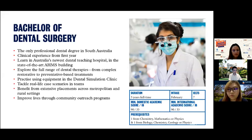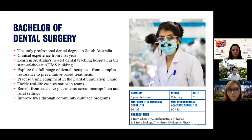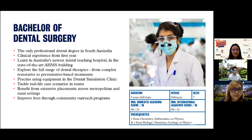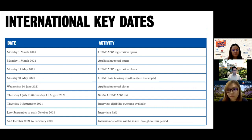For prerequisite subjects, students need to fulfil two subjects: one from chemistry, mathematics, or physics; and another from biology, chemistry, geology, or physics. For international key dates: the portal has already opened in March for 2022 intake registration. UCAT ANZ registration closes on 17th May — without this, students cannot submit to University of Adelaide. There is a late booking deadline of 31st May. Applications to University of Adelaide can be submitted before 30th June. UCAT ANZ tests are held in July to mid-August. On 9th September, students receive the outcome of interview eligibility. Interviews are held late September to early October via Zoom video conference.